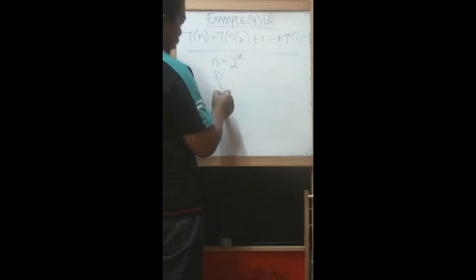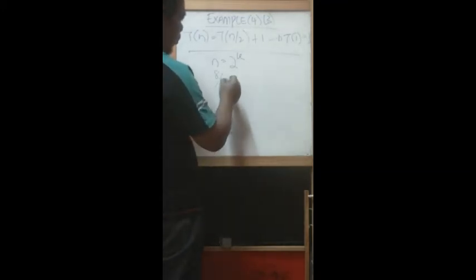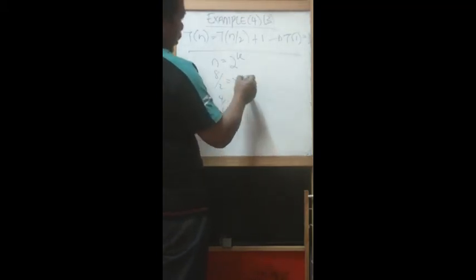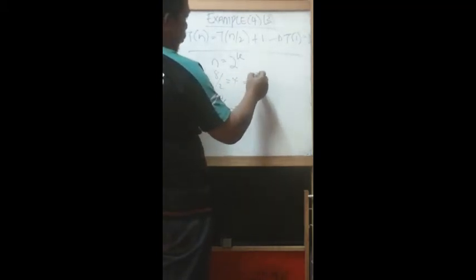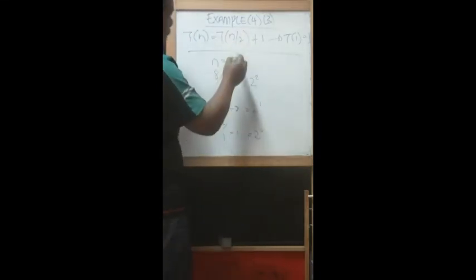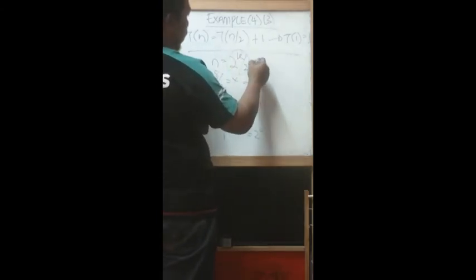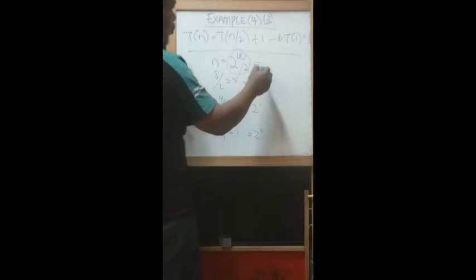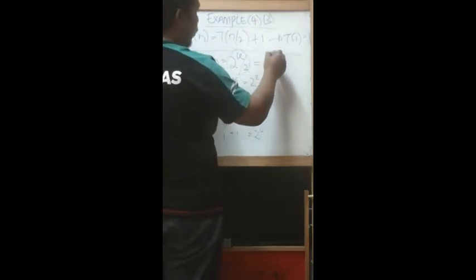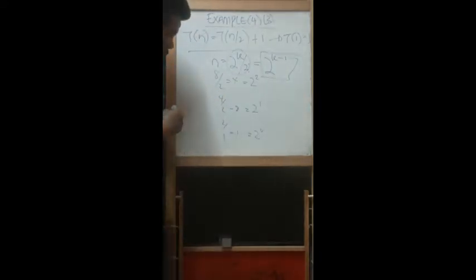If n equals eight, then eight over two is four, four over two is two, two over two is one. This becomes one, two, four — the pattern is two to the power of zero, two to the power of one, two to the power of two. So here, n over two equals two to the power of k minus one.